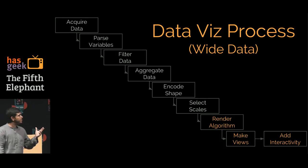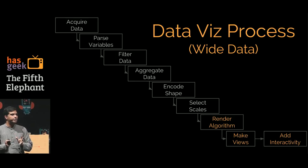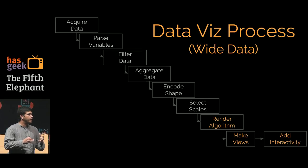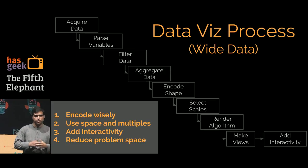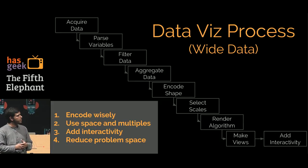The data process for wide data is we still acquire the data, parse the data, filter the data, aggregate the data, encode the shapes, select scales. We may not only render it in coordinate systems but we may render it algorithmically and then we may add views and add interactivity to it. If you are really thinking about doing multivariable visualization or multidimensional visualizations, encode wisely. Think of what you are encoding and how can you make clever choices around that. Use the space that you have and the multiples much more cleverly so that you are not just using one chart but using them to do faceting or multiple views. Add interactivity because interactivity is really needed when you want to do multiple variables, so linking and brushing is very important. Most of the tools we have right now are not really good at it. People who are designing tools should think about more interactive techniques that they can apply and in some cases even reduce the problem space. Those are the kind of four techniques. That is the data process you follow for wide data.